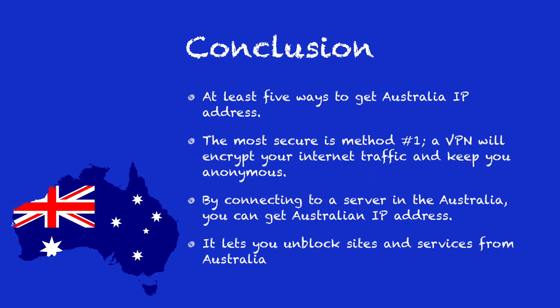There are at least 5 ways to get an Australian IP address. However, the most reliable, secure, and efficient is a Virtual Private Network. To find out which are the best VPN services, find a link in the description.